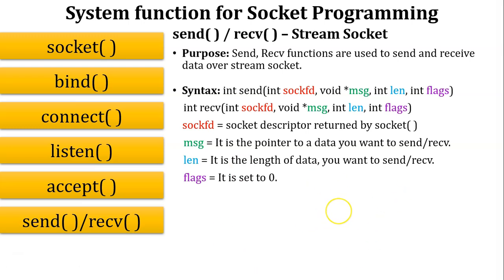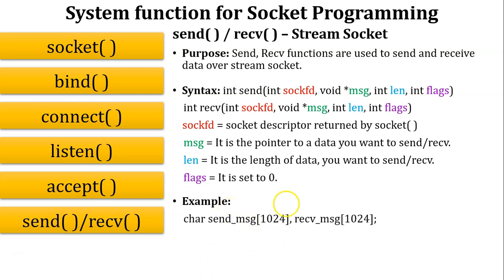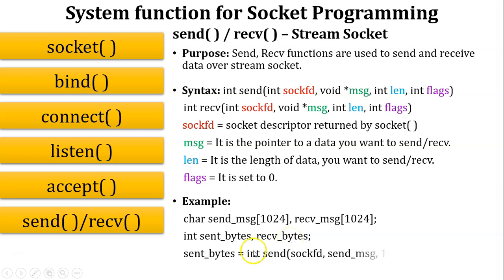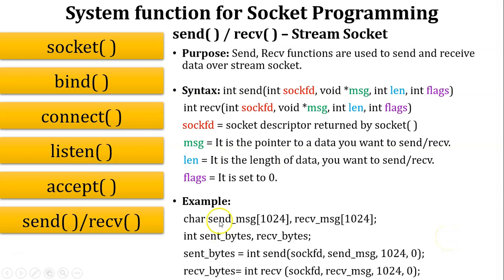In programming, create a character array for sending and receiving messages, then declare integer variables send_bytes and recv_bytes. Write the send function: send_bytes = int send(sockfd, send_message, 1024, 0), where 1024 is the length defined in the character array and the flag is 0. Similarly for receive: recv_bytes = int recv(sockfd, recv_message, 1024, 0). send_bytes and recv_bytes store the return values, both in bytes.